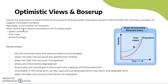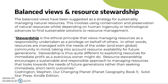Boserup's graph shows that food supply does not become outstripped by population. In some versions, the graph shows that every time the food supply approaches the population level, new technologies are developed to increase the food supply, causing it to step up repeatedly rather than being exceeded.